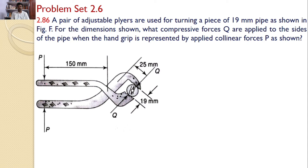You can see this is the most commonly used plier in our regular household applications. A 19 mm pipe is tightened by using this plier. A force P is applied at these grips and here we can find a fixed support.